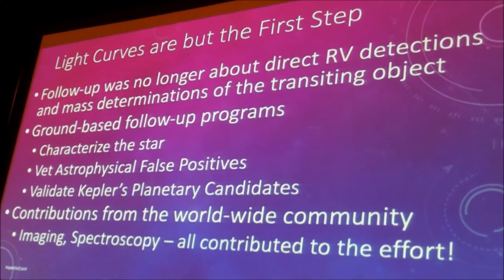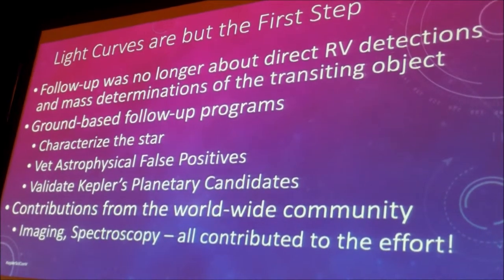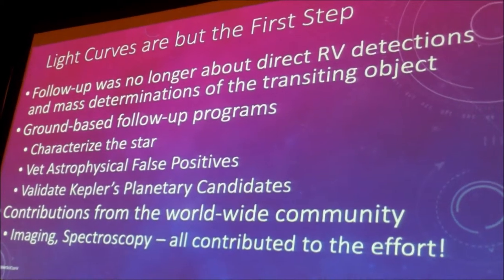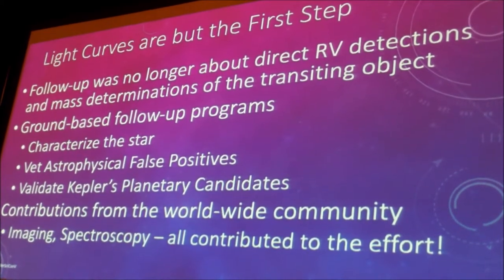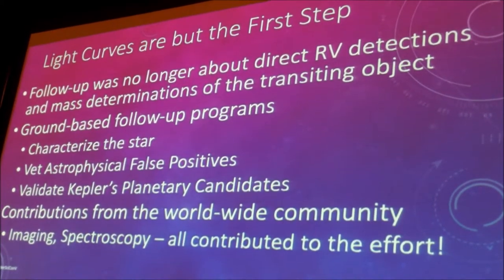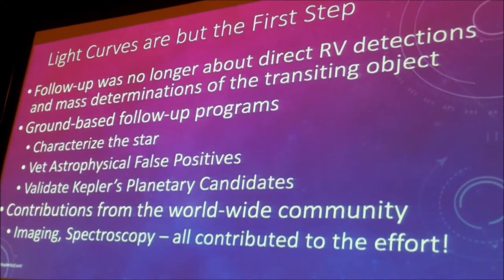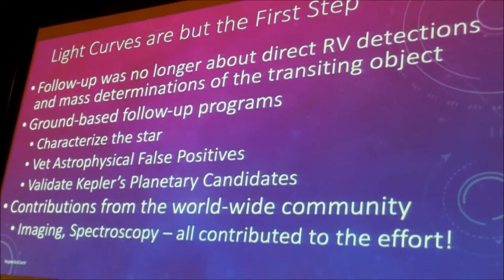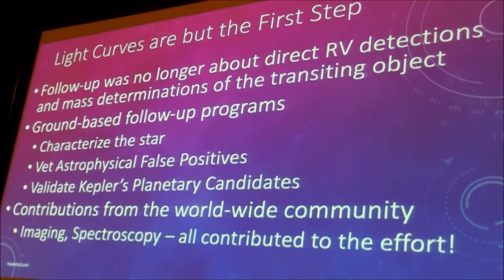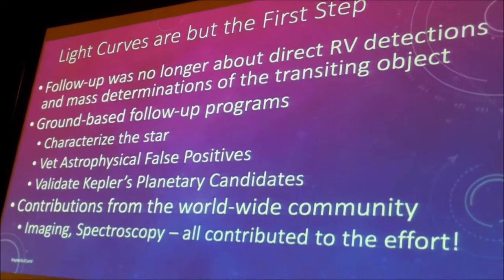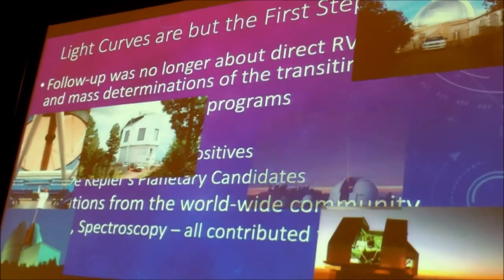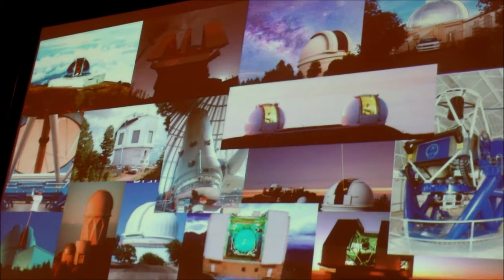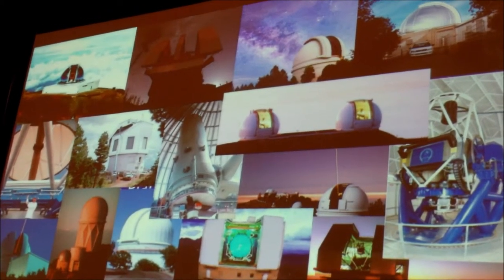Before Kepler, the ground program was all about radial velocities. The ground program actually became much more intensive after that because radial velocity detections were no longer possible. There was an entire ground program intended to characterize the star, vet the false positives, and then eventually validate the candidate itself. A lot of what we did was as a funded follow-up program, but the community as a whole made enormous contributions to the process, both in terms of imaging and spectroscopy. If you were to count up all the telescopes around the world used to do this — all in the northern hemisphere for Kepler — it's an enormous task that the community took on.